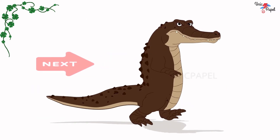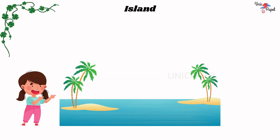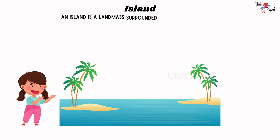Island: An island is a landmass surrounded by water on all sides.